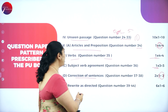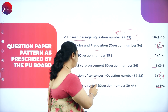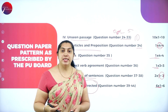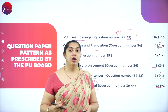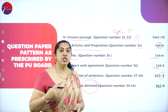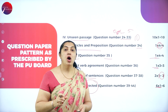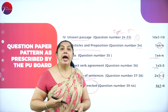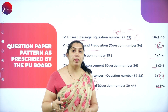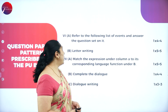The next section is 'Rewrite as Directed' — six questions, one mark each. This includes homophones, homonyms, do-forms, question tags, and framing questions for underlined words. Read each question carefully and answer accordingly.